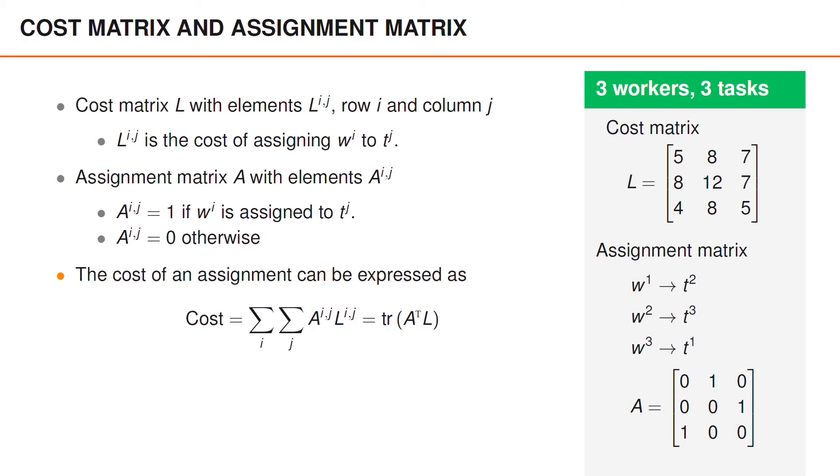Using this cost matrix and this assignment matrix, the cost of the assignment can be expressed as shown here, by the trace of the assignment matrix transposed multiplied by the cost matrix. And this is equivalent to taking the sum over all workers, the sum over all tasks, and if the worker is assigned to the task, then we add the corresponding cost to the total cost.